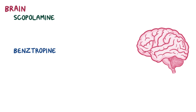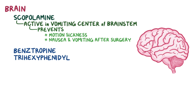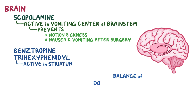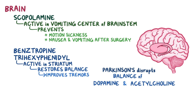There are also muscarinic antagonists which act primarily in the brain, like scopolamine, benztropine, and trihexyphenidyl. Scopolamine prevents the action of acetylcholine on muscarinic receptors in the vomiting center of the brainstem, making it effective in preventing motion sickness during travel or nausea and vomiting after surgery. Benztropine and trihexyphenidyl are mainly active in the striatum, part of the basal ganglia. Since there is usually a balance between dopamine and acetylcholine signaling in the striatum, a loss of dopamine — as in Parkinson's disease — increases relative acetylcholine signaling. Therefore, these drugs can restore the balance of cholinergic and dopaminergic signaling and improve the tremors seen in Parkinson's disease. However, due to their central nervous system effects, all three of these drugs can produce sedation and mental confusion.